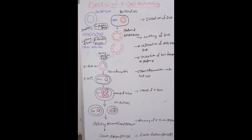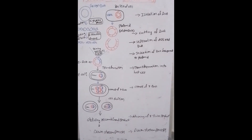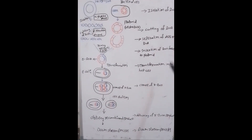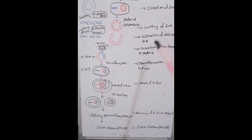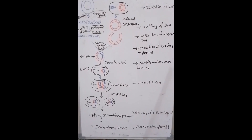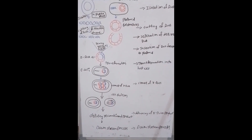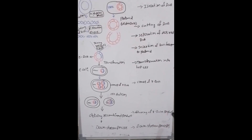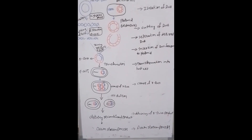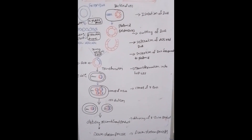In this process, the following steps are involved: isolation of DNA, cutting of DNA, separation of desired DNA, insertion of DNA fragment to plasmid, transformation into host cell, clones of rDNA, obtaining of rDNA product, and downstream process.